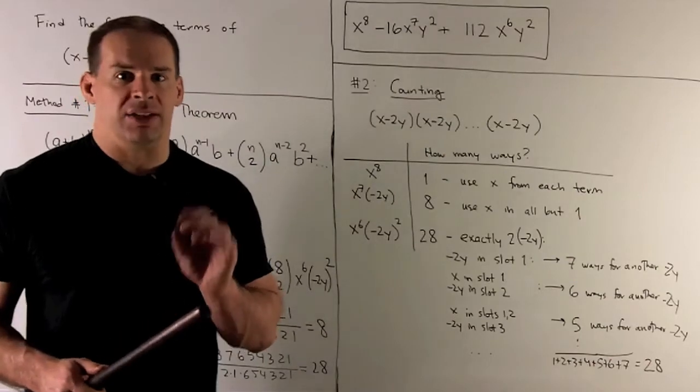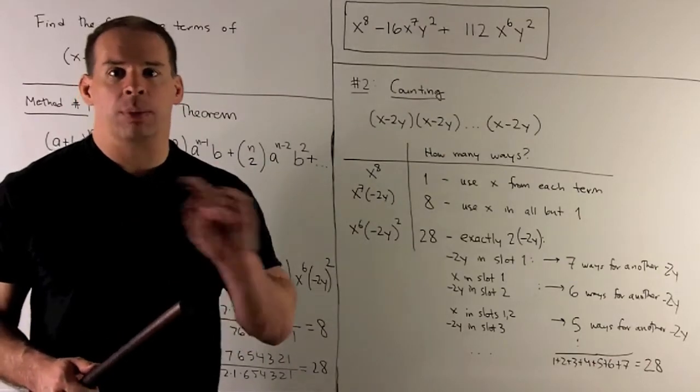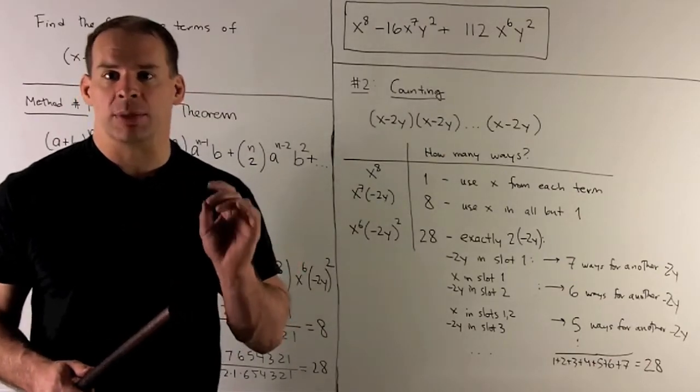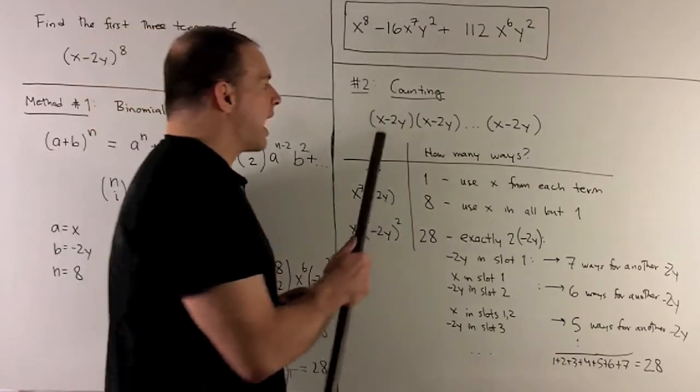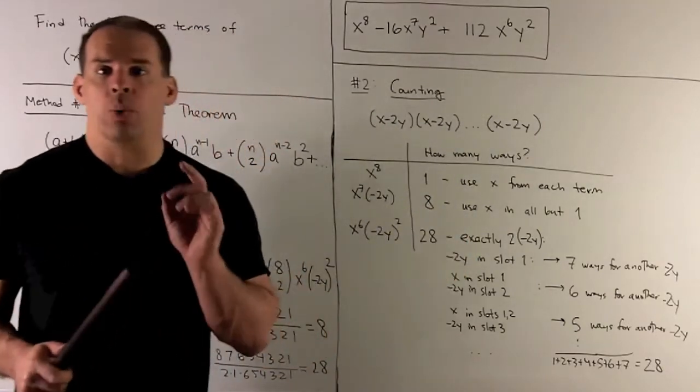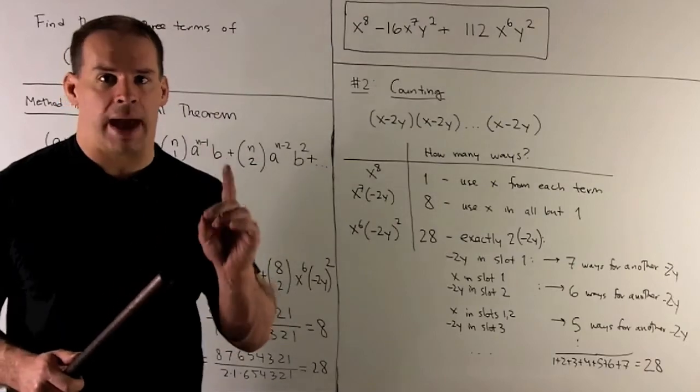So, the idea would be if I chose a -2y at any point, the highest power I can get is going to be x^7, because we only have 8 sets of parentheses. So, there's only one way to get x^8.